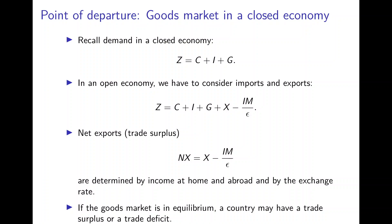In an open economy, of course, we have to consider imports and exports. So we add to the demand of the closed economy exports of the country, denoted by X, minus imports divided by the exchange rate, because that's imports measured in domestic goods. By convention, imports are subtracted from demand because that's demand for goods produced domestically. The net exports are the difference between exports and imports measured in domestic goods.